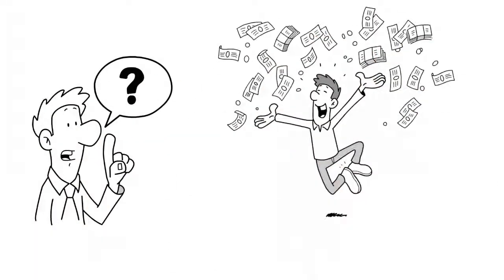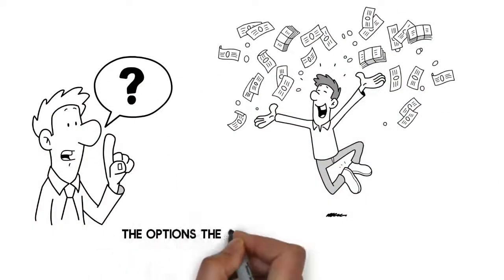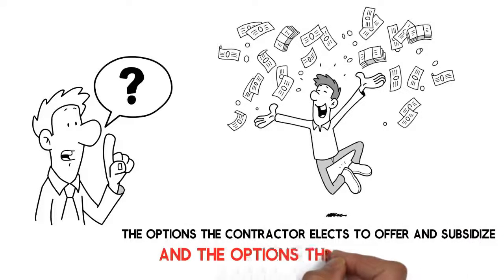The borrower gets a decision on the spot. The exact terms of the loan are determined by the borrower's credit, the options the contractor elects to offer and subsidize, and the options the consumer picks.